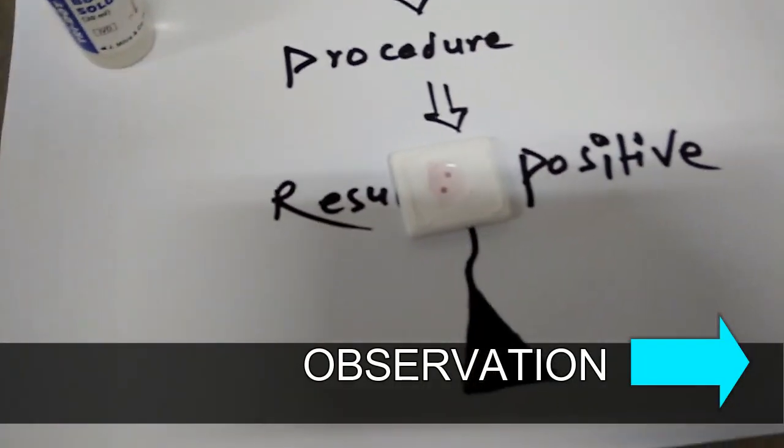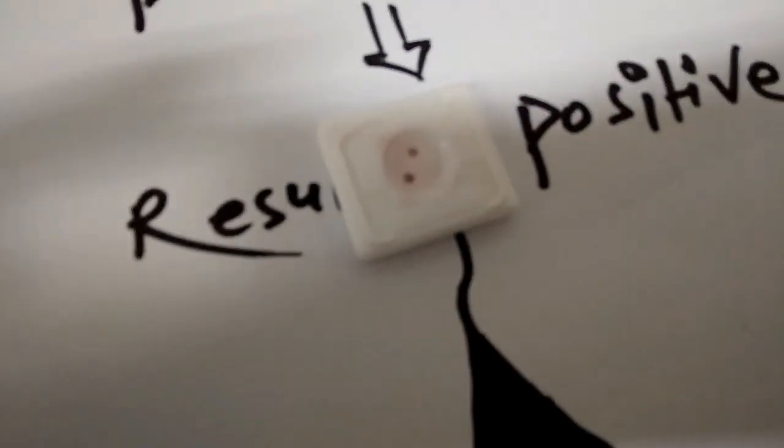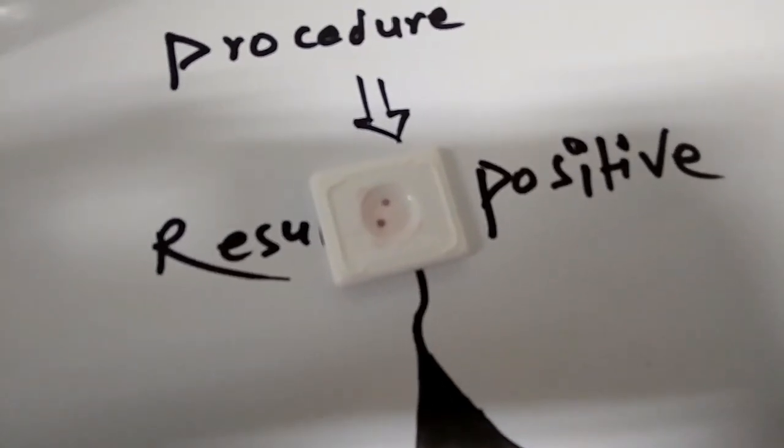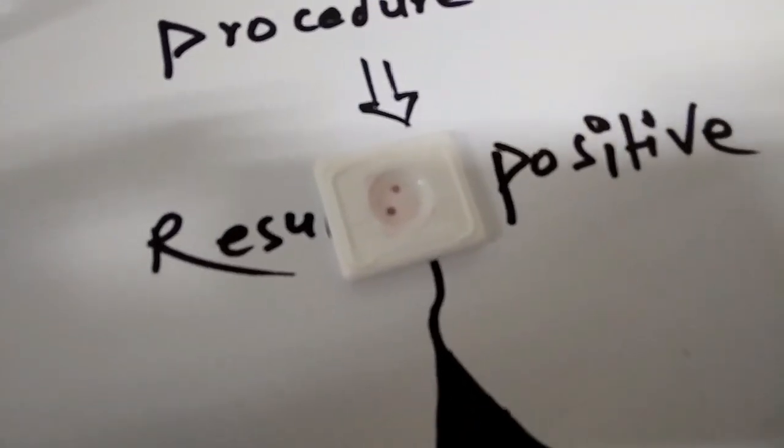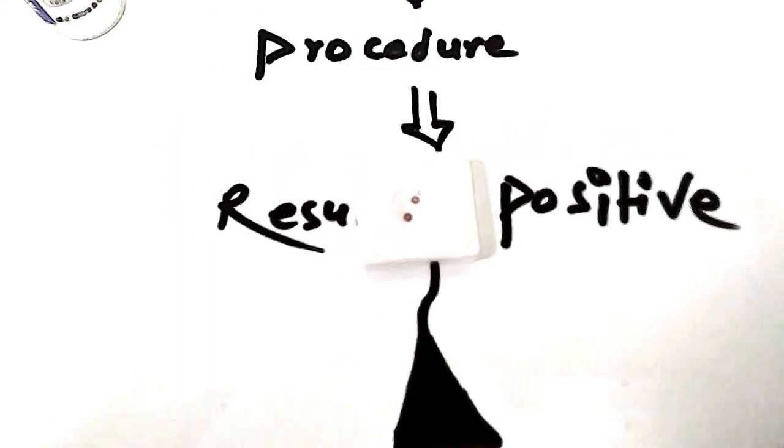About observation: a pink dot at the control region only means the test is negative. No pink dot, or a pink dot without the control region, means the test is invalid. Any dot including the control region means the test is positive.